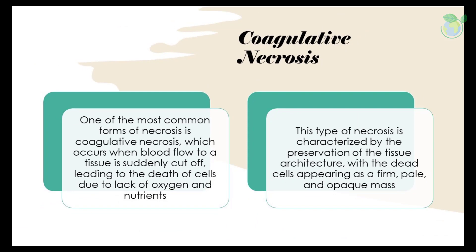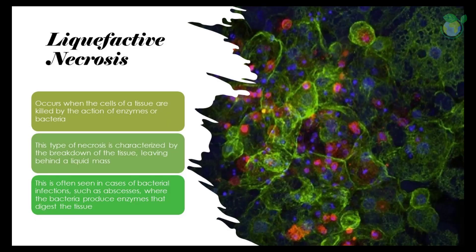Coagulative necrosis: one of the most common forms of necrosis is coagulative necrosis, which occurs when blood flow to a tissue is suddenly cut off, leading to the death of cells due to lack of oxygen and nutrients. This type of necrosis is characterized by the preservation of the tissue architecture, with the dead cells appearing as a firm, pale, and opaque mass.